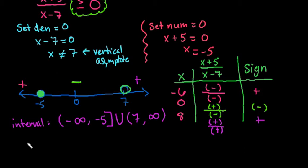For set notation, if you like using set notation better, you would just write this as x such that x is less than or equal to negative 5. That's how we would write this part right here. And then 7 to infinity is really just x is greater than 7.